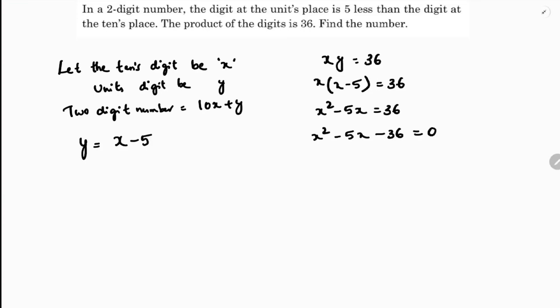Now I need to factorize this one. 36 factors are 9 times 4, 2 times 18, 1, 36, 6, 6. I need 5. So I will use 9 and 4 here. I need minus 5. So x square minus 9x plus 4x minus 36 equals 0.